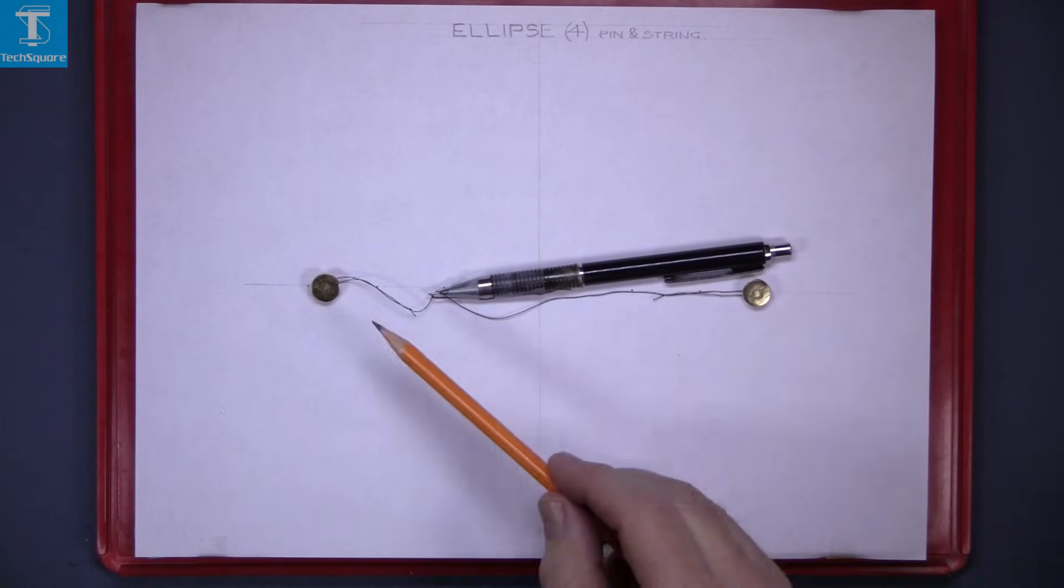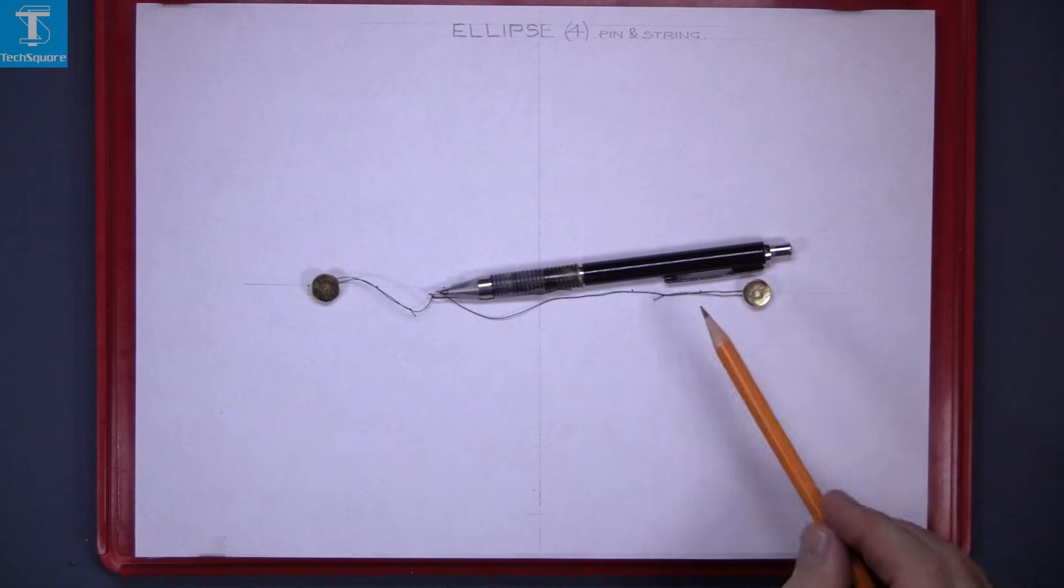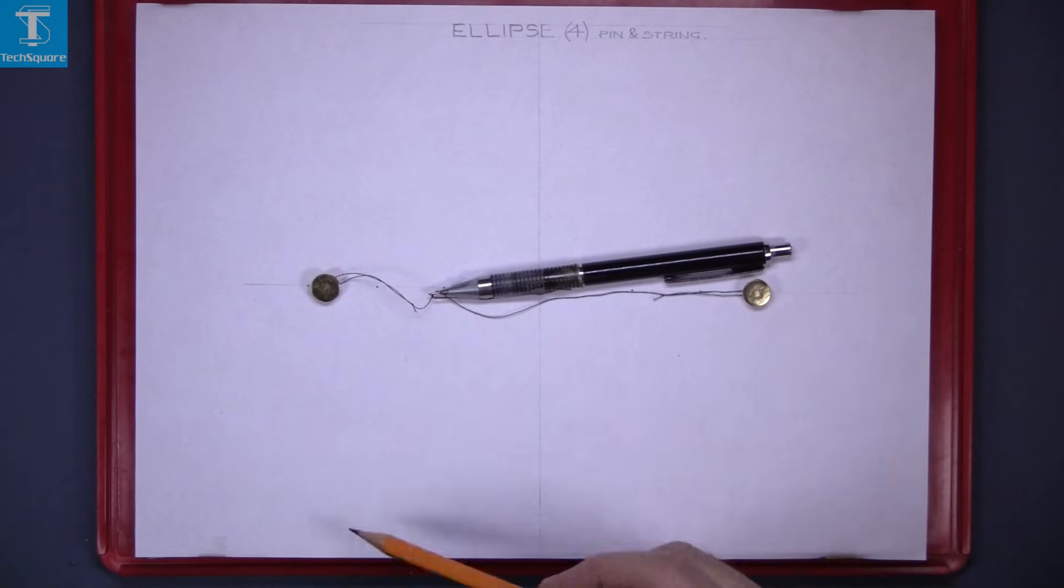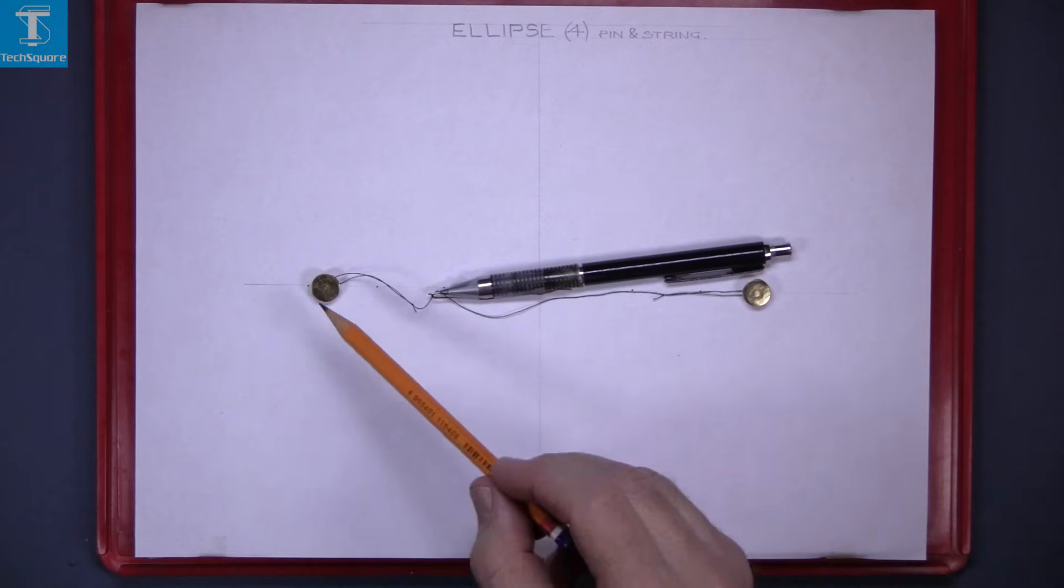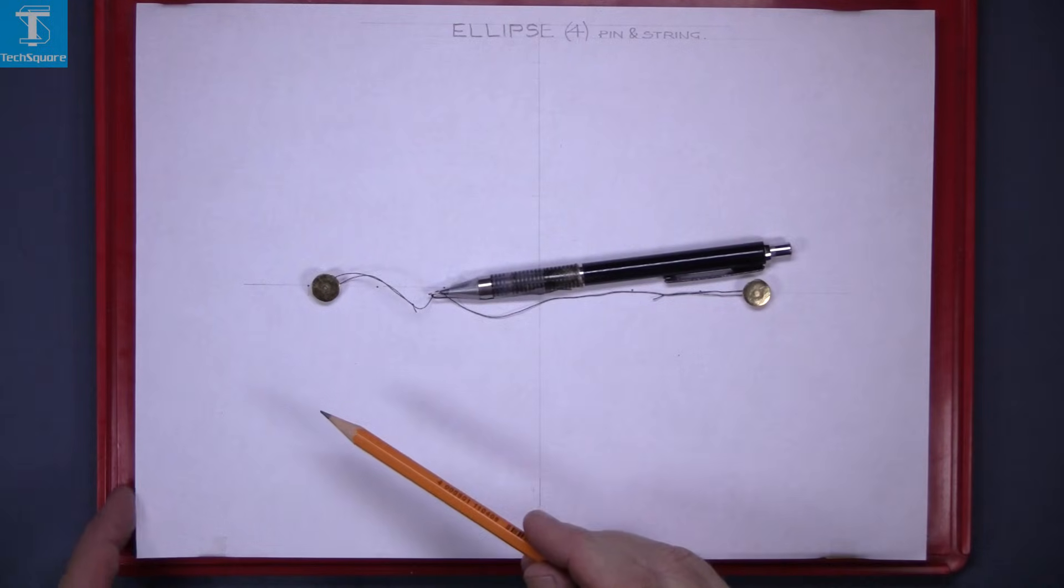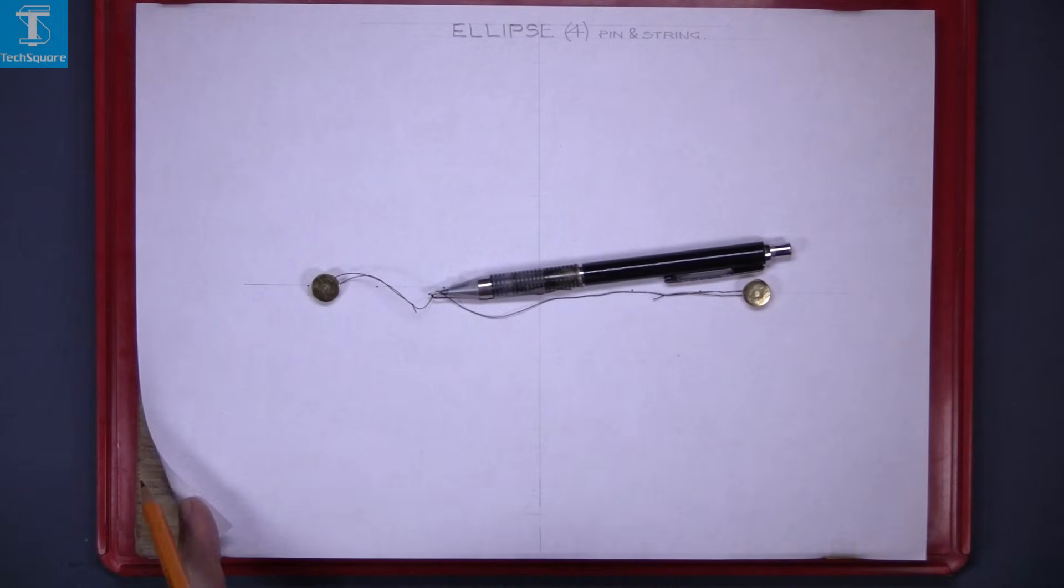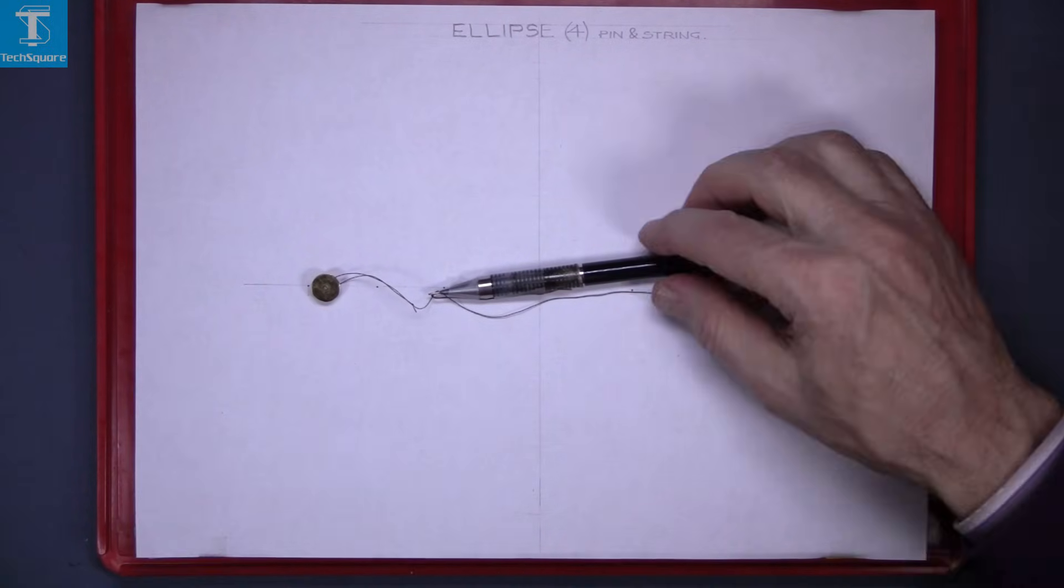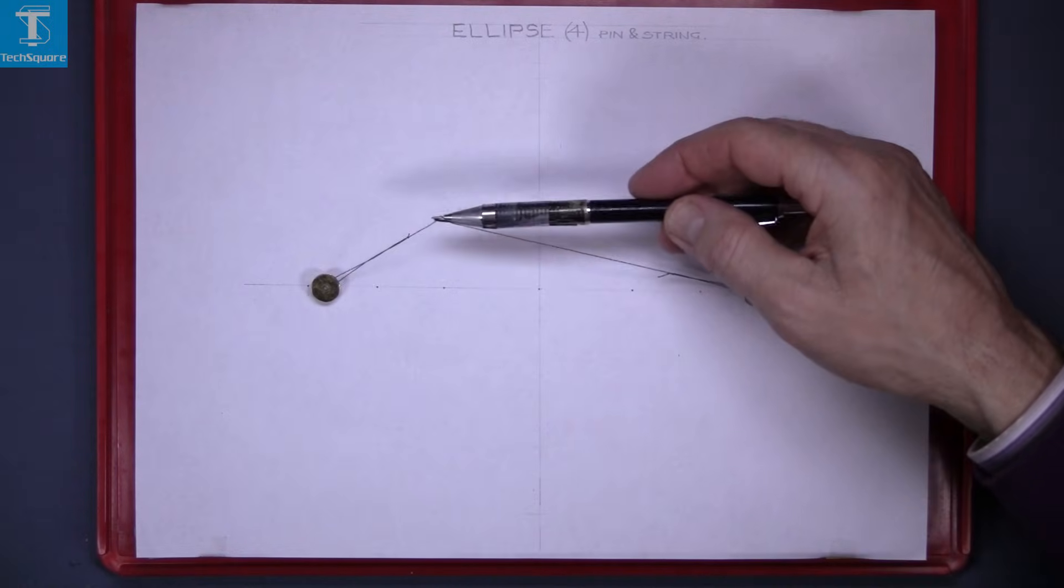I have two drawing pins pressed into the sheet and a string attached to them. To get the pins to grip, I have placed a piece of timber between the sheet of paper and the text square drawing board. The pins are located at the focal points of the ellipse.